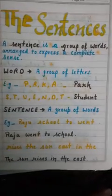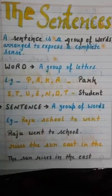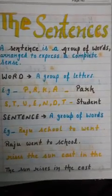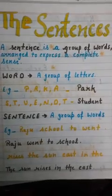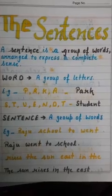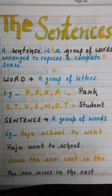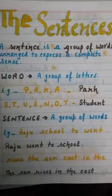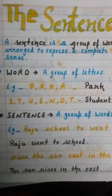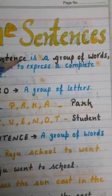Today we will study about sentences — the same topic we had studied in our previous class, so let's revise once again. A sentence is a group of words arranged to express a complete sense. Words are properly arranged to convey a proper message, and that is what we call a sentence.